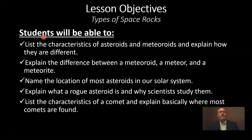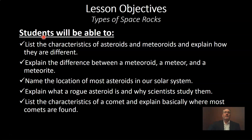So here are our lesson objectives for today. By the end of this video you should be able to list the characteristics of asteroids and meteoroids and explain how they're different. You need to be able to explain the difference between a meteoroid, a meteor, and a meteorite — these words all look very similar. You also need to be able to name the location of asteroids in our solar system, explain what a rogue asteroid is and tell me why scientists study them, and list the characteristics of a comet and explain basically where most comets are found in our solar system.